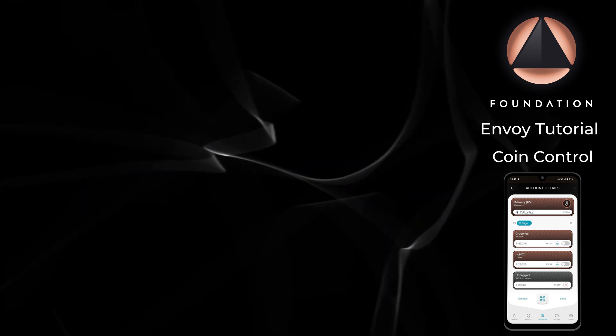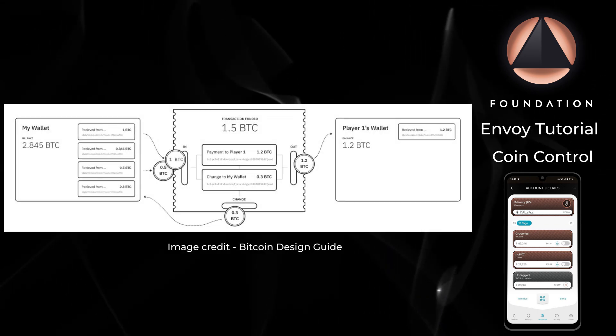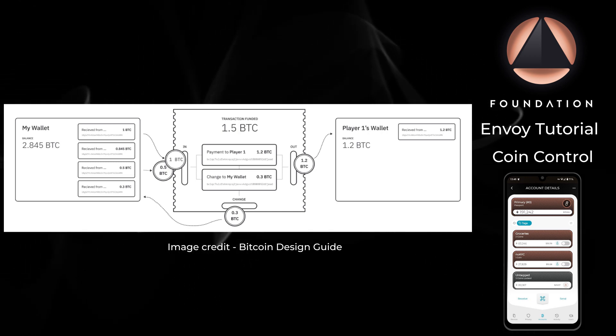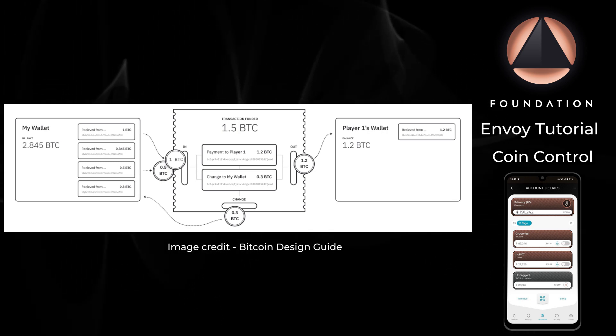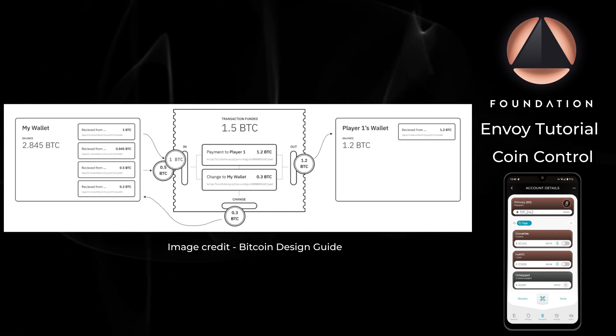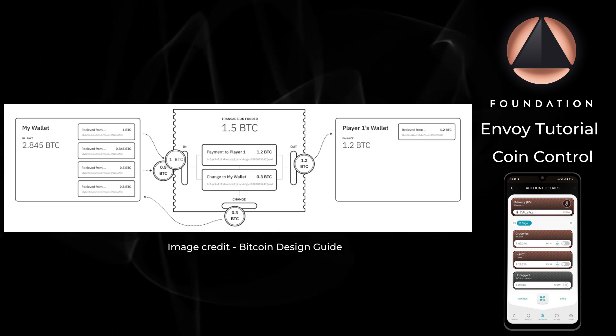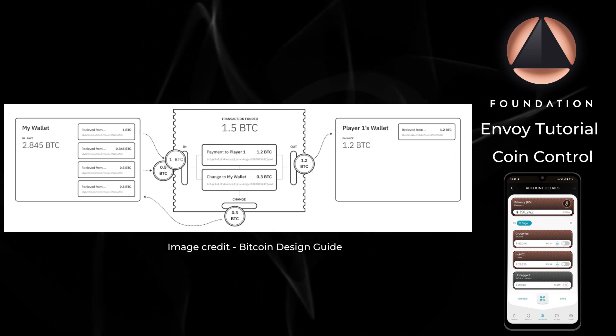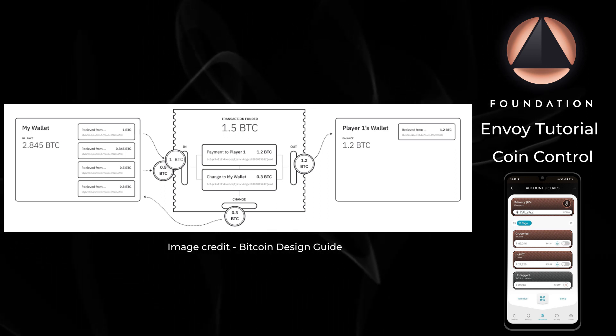In the same scenario, if the sender were to manually select the coins they wanted to be used as inputs when constructing a spend transaction, they would be said to be using coin control.